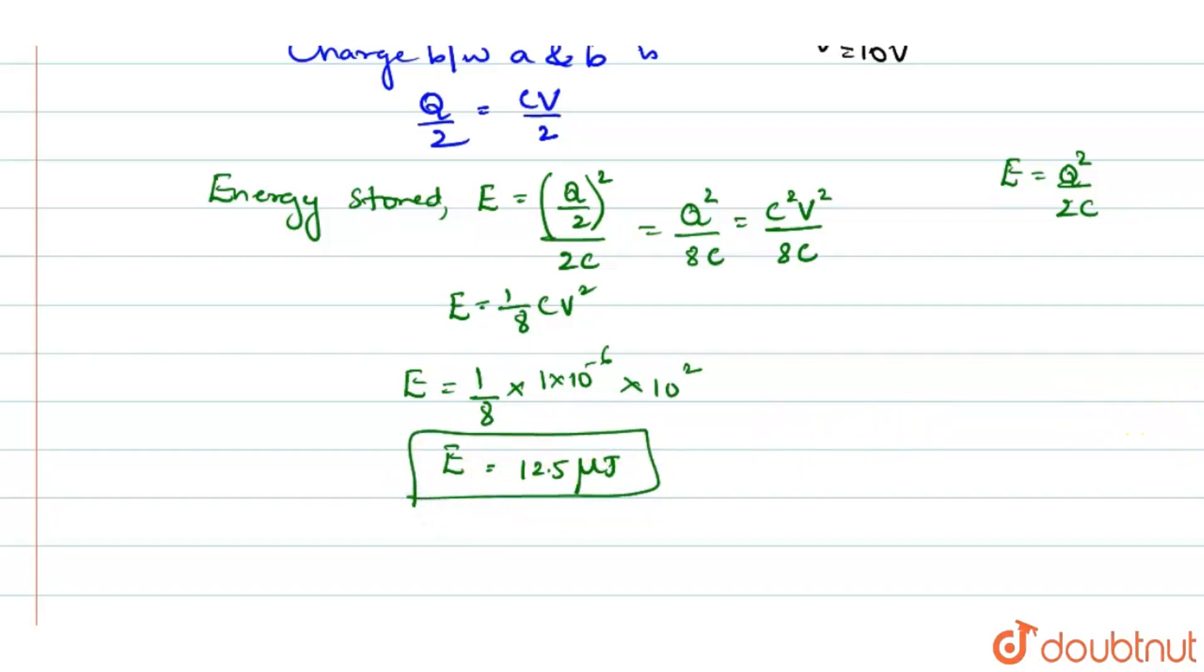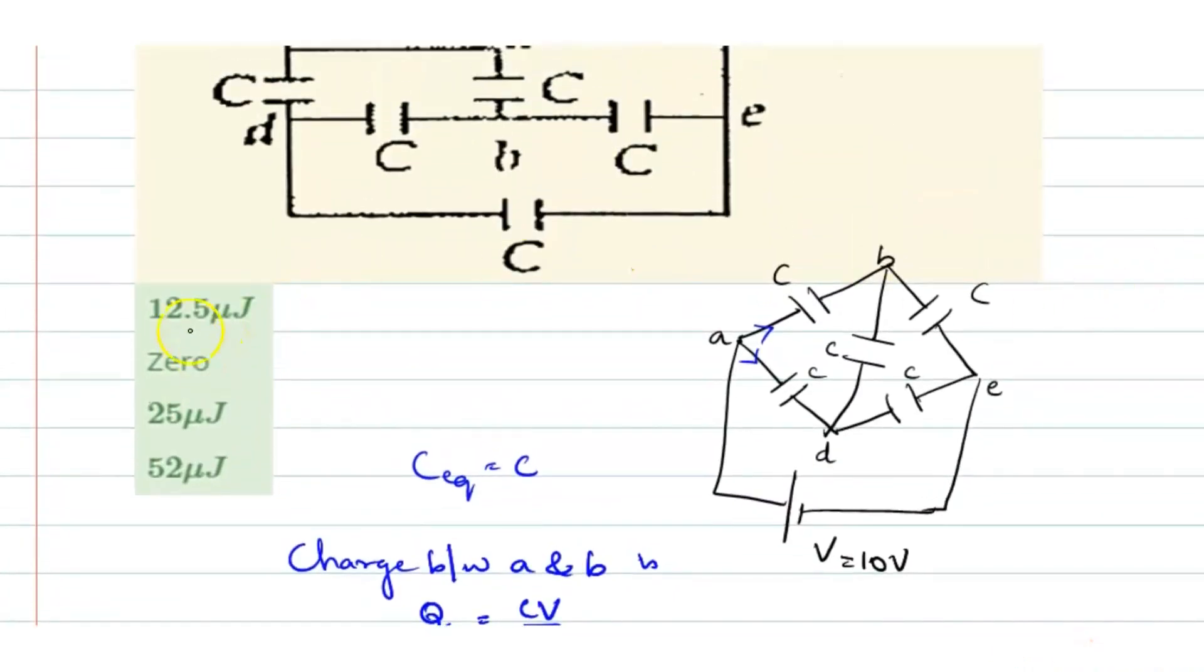This will be the energy stored in the equivalent capacitor that is in the circuit. You can go with option A, 12.5 microjoules.